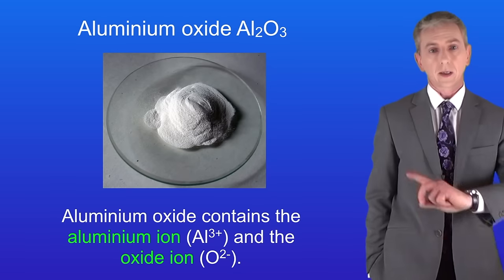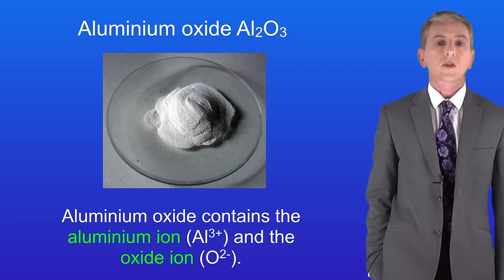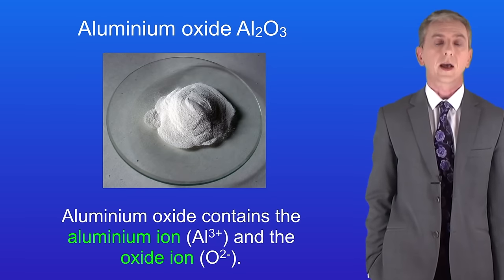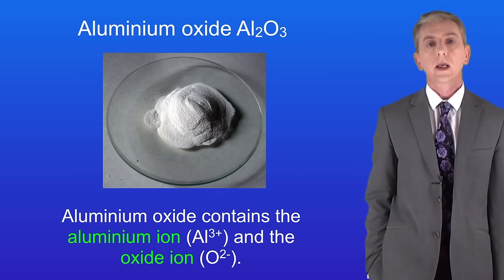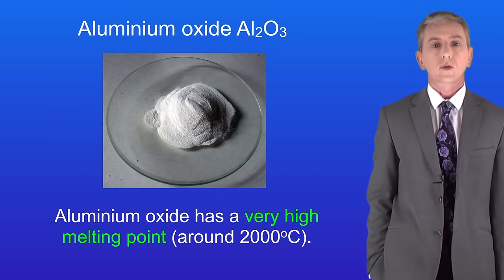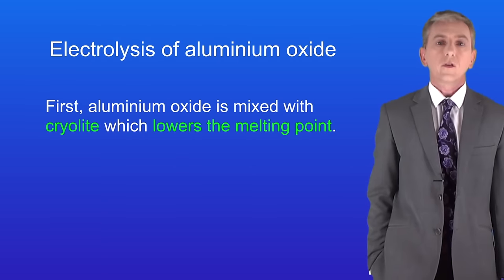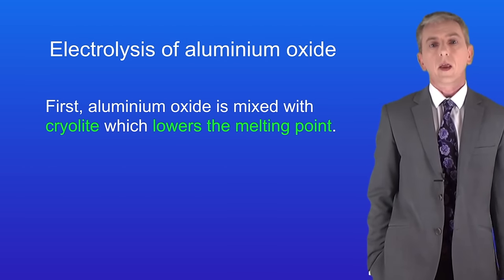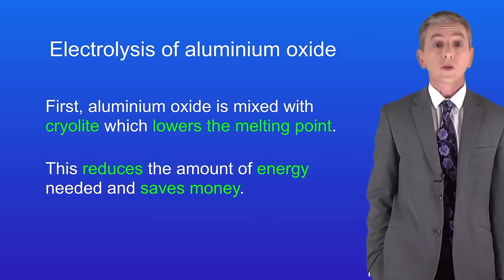I'm showing you aluminium oxide here. Aluminium oxide contains the aluminium ion Al3+ and the oxide ion O2-. Aluminium oxide has a very high melting point, it's around 2000 degrees celsius. In the first stage aluminium oxide is mixed with the compound cryolite. Now that lowers the melting point. This reduces the amount of energy needed and it saves money.